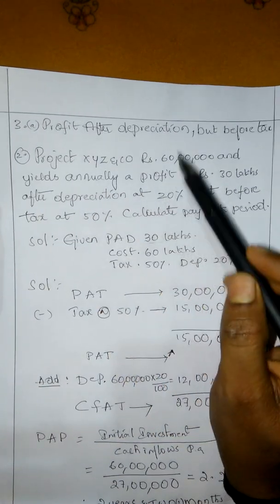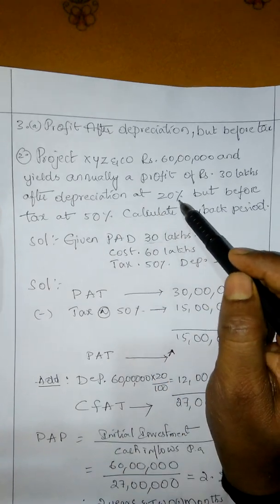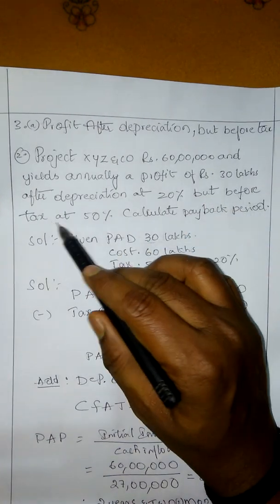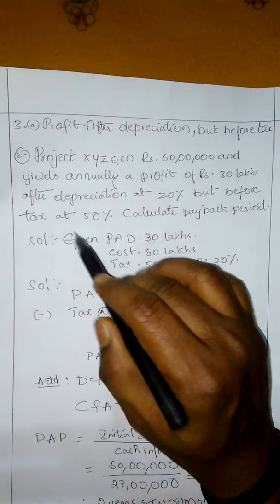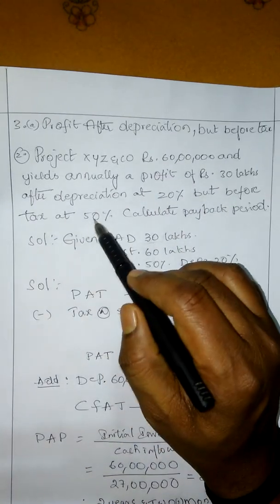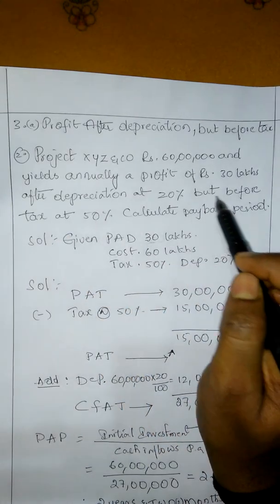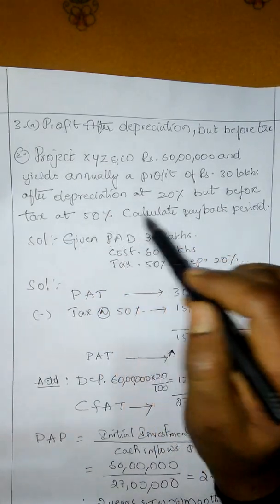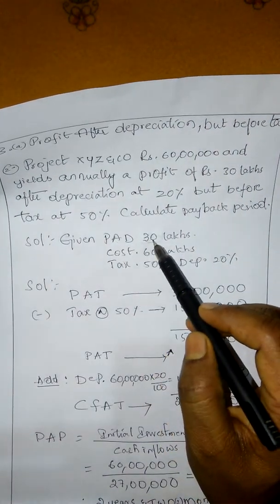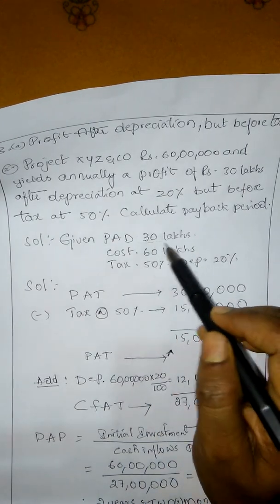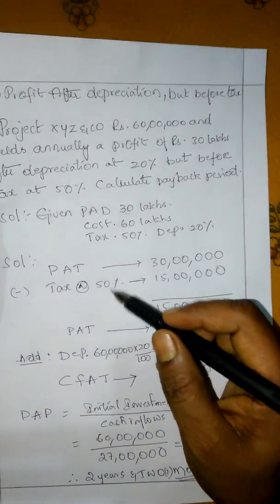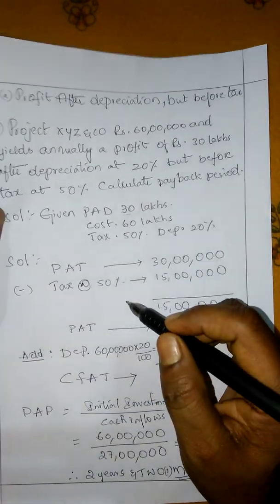Calculate the payback period. Given: profit after depreciation is 30 lakhs, cost of project is 60 lakhs, tax is 50%, depreciation is 20%. On a formula basis, we will solve this problem.